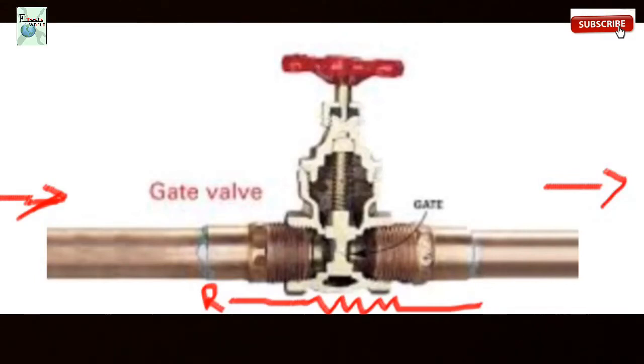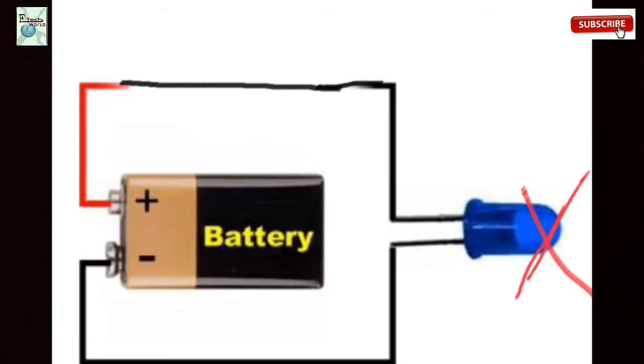the output current will be reduced because of this resistor principle. Now we are going to see the function of the resistor. For example, if you connect the LED bulb with a 9-volt battery directly,